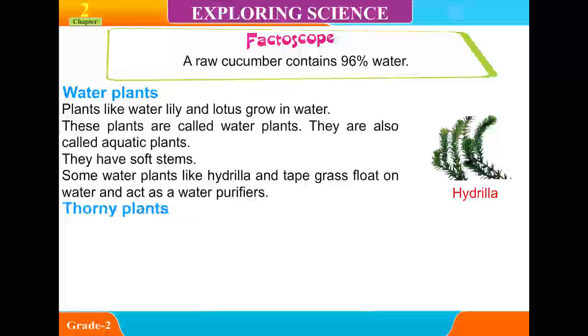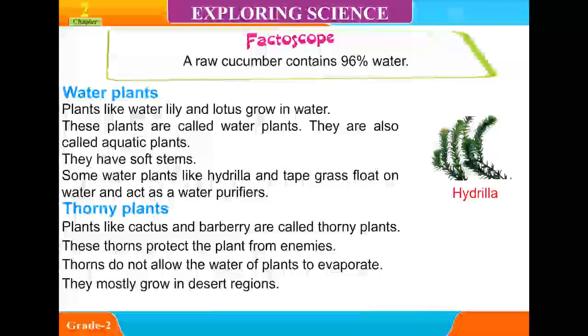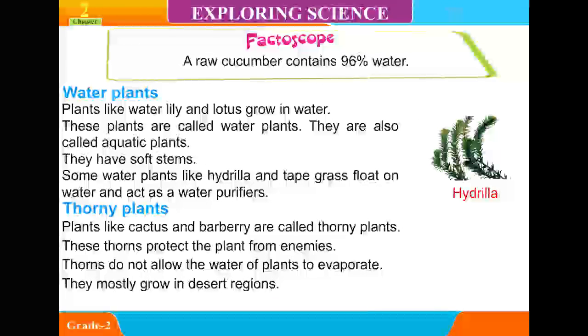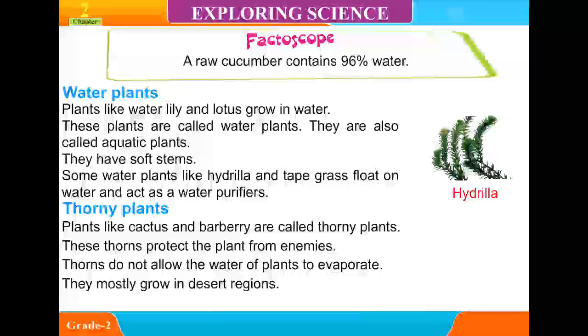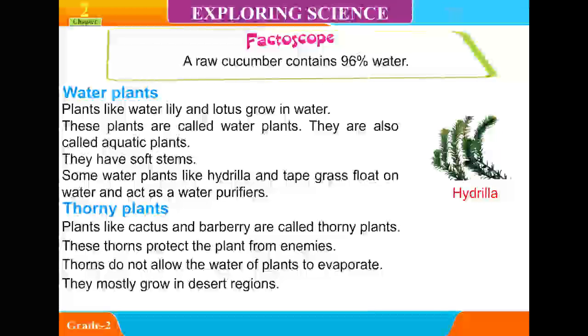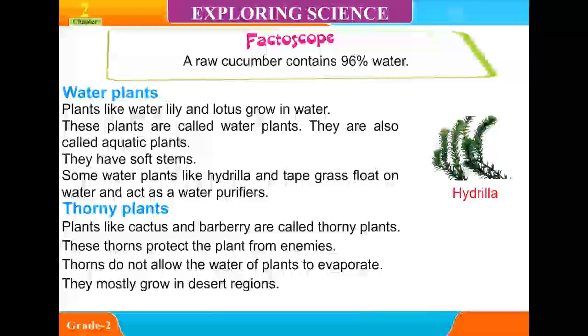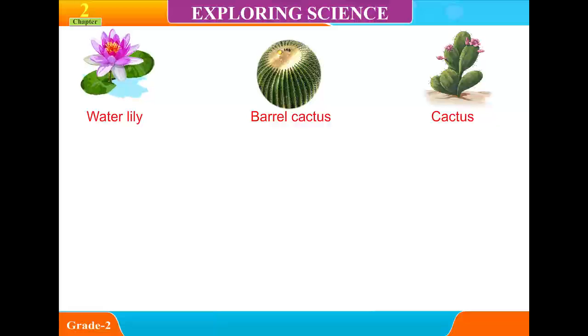Examples of water plants: Hydrilla. Thorny Plants. Plants like cactus and barbary are called thorny plants. These thorns protect the plants from enemies. Thorns do not allow the water of plants to evaporate. They mostly grow in desert regions. Examples: Water lily, Barrel cactus, Cactus.